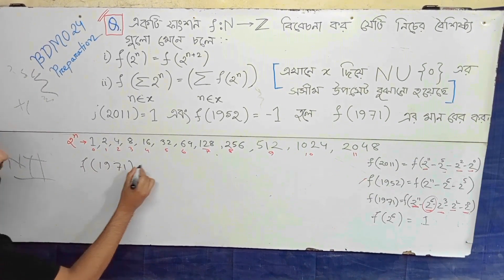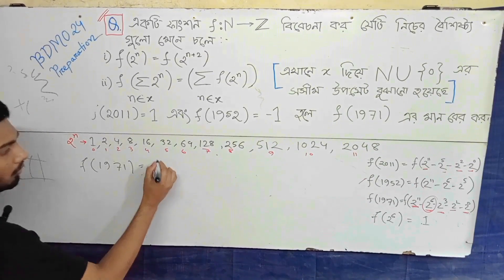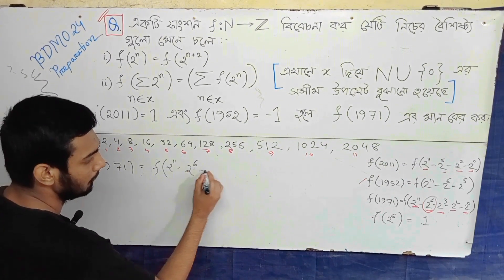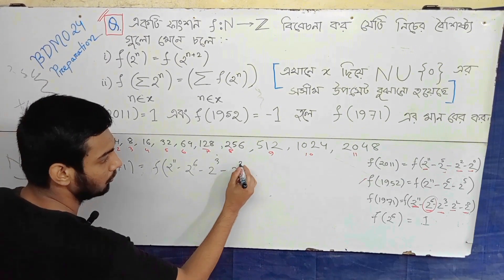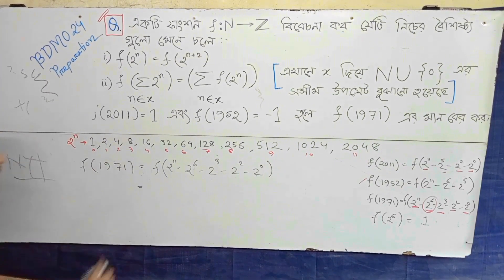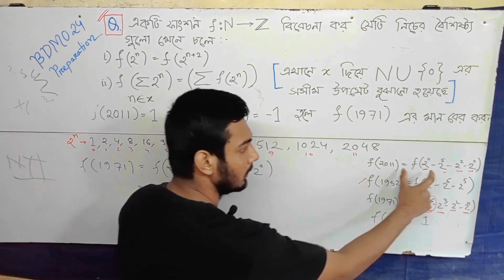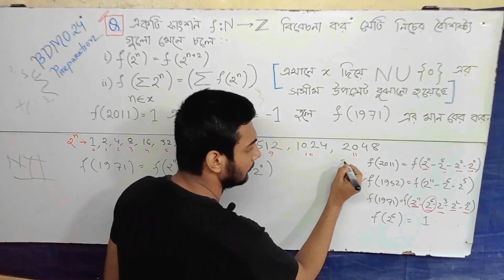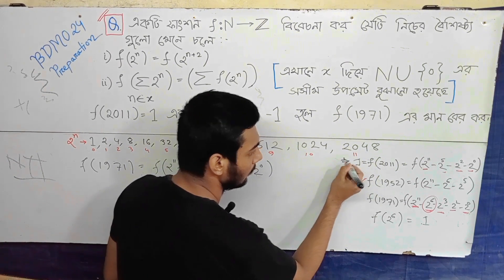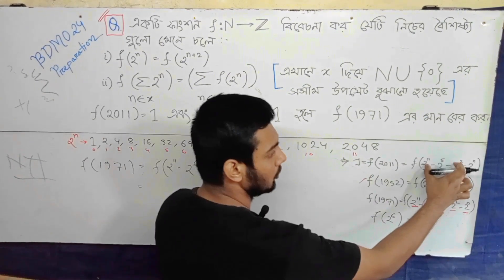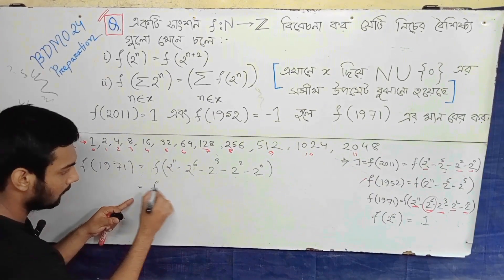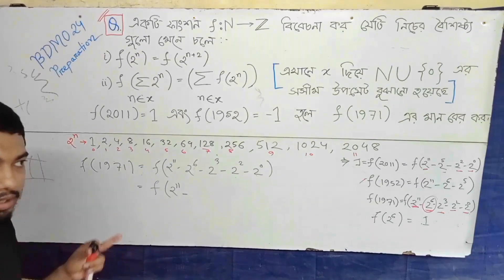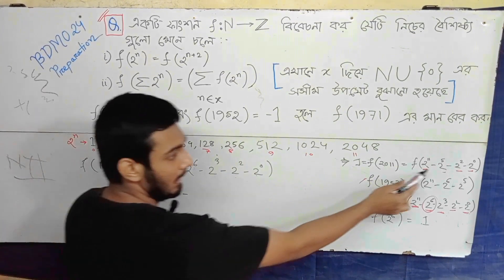f of 1971, how do we write the expression? f of 2 to the power 11 minus f of 2 to the power 6 minus 2 to the power 3 minus 2 to the power 2 minus 2 to the power 0. So if we write the expression, then we write 2 to the power 11 and the expression 2 to the power 11. So we write the expression 2 to the power 11 minus 1.